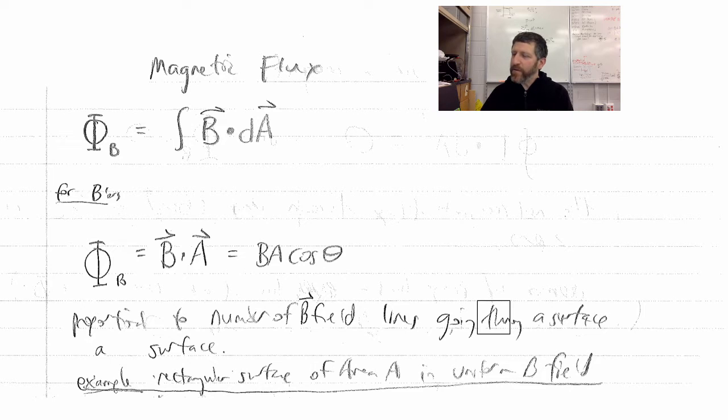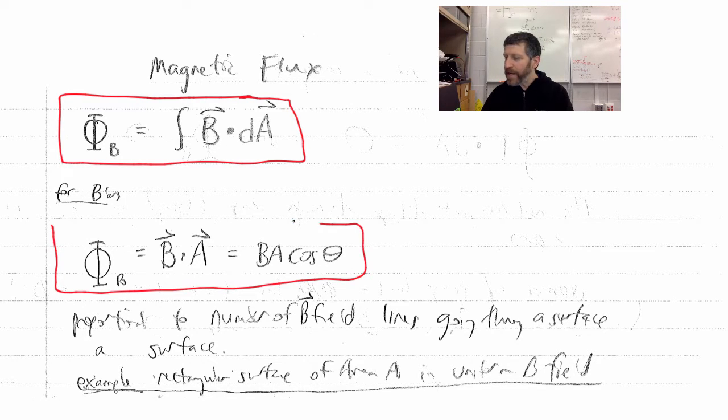So if you're in the AP Physics C class, you'll have to use this to figure out the magnetic flux. It's the integral of B dot dA. If you're in the B class or the AP Physics II class, it's just B dotted on A. We won't be changing the magnetic field on you. It'll just be a constant field.